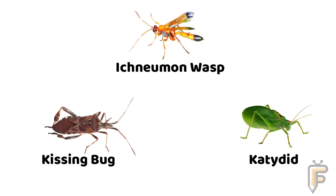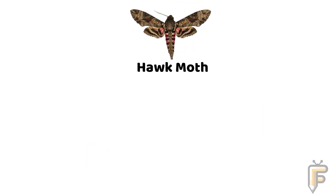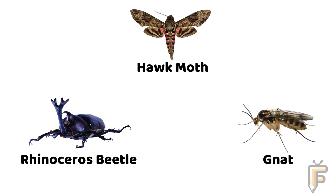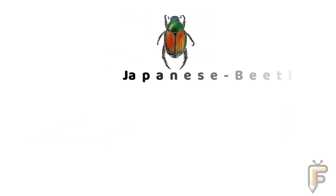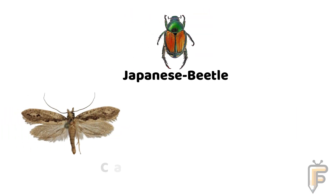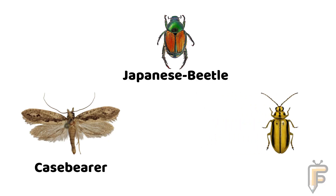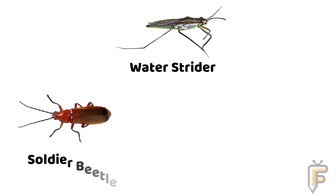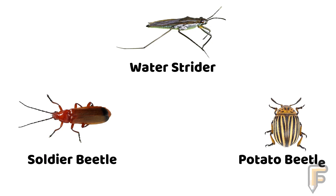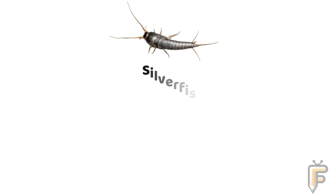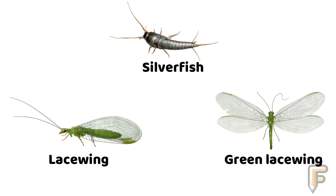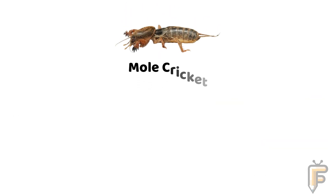Hawk moth, rhinoceros beetle, net-winged beetle, Japanese beetle, case bearer, leaf beetle, water strider, spider beetle, potato beetle, silverfish, leaf-wing, green leaf-wing, mole cricket.